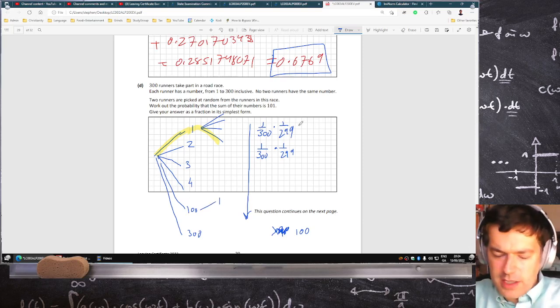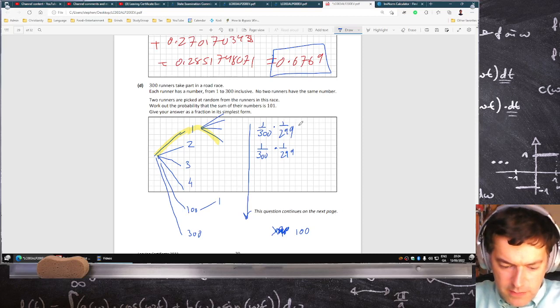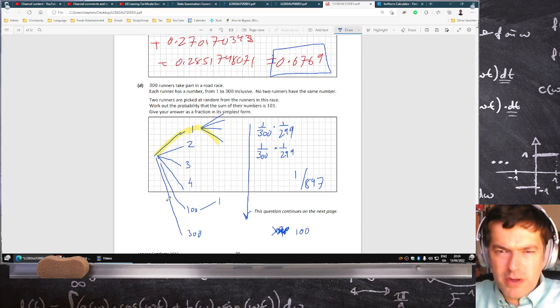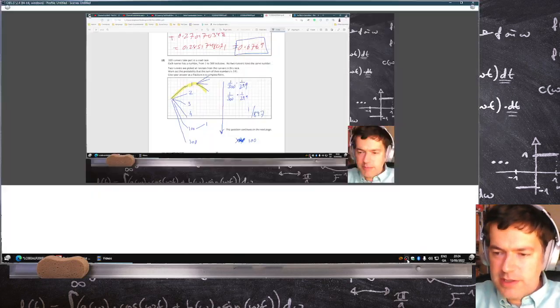So, yeah, I can't remember what I got last time. 1 over 300, times 1 over 299, times 100. Yeah, that's 1 over 897. I think I said there was 99 paths. Why did I say that? There's 100 paths. So 1 over 897. I wonder if people were saying that in the chat box, the comments.